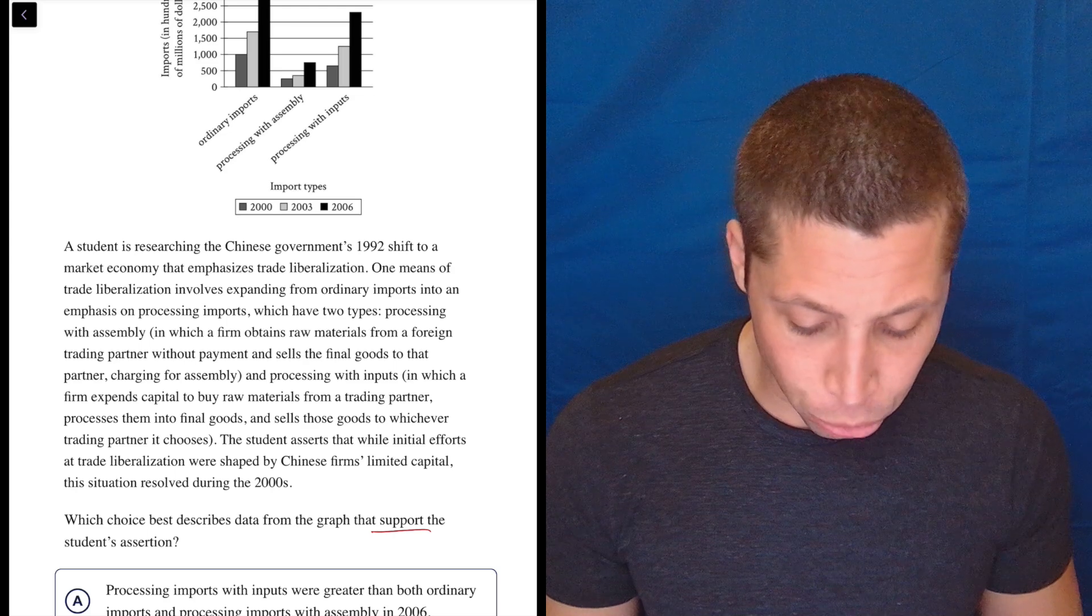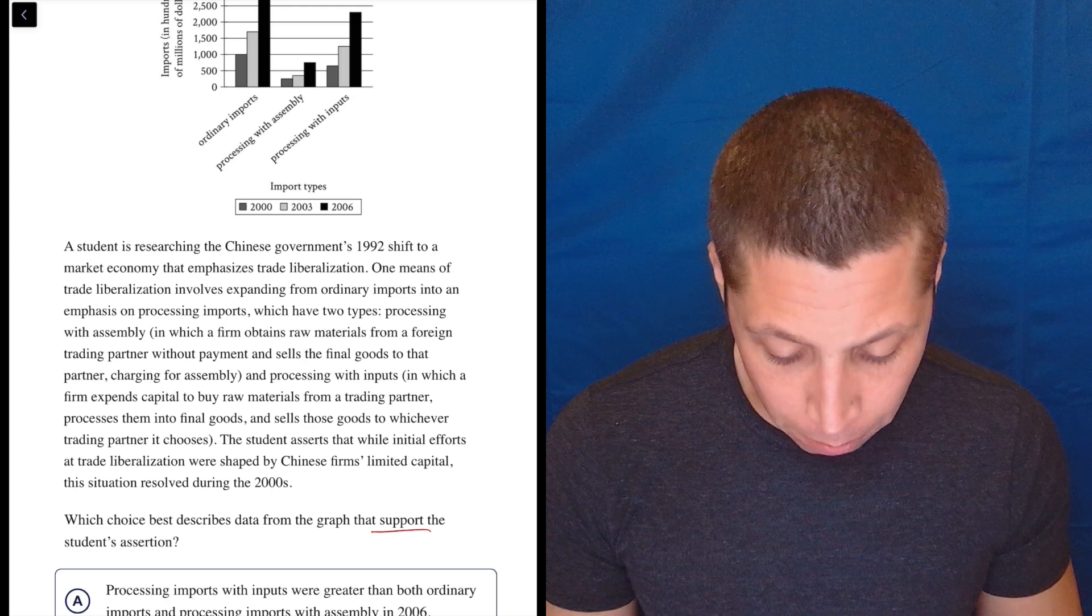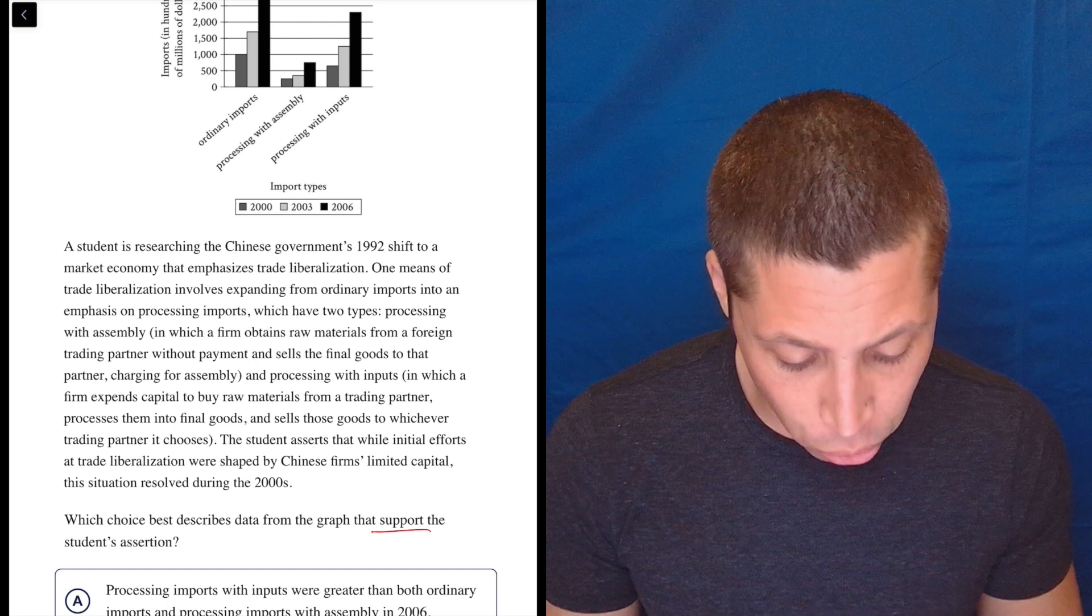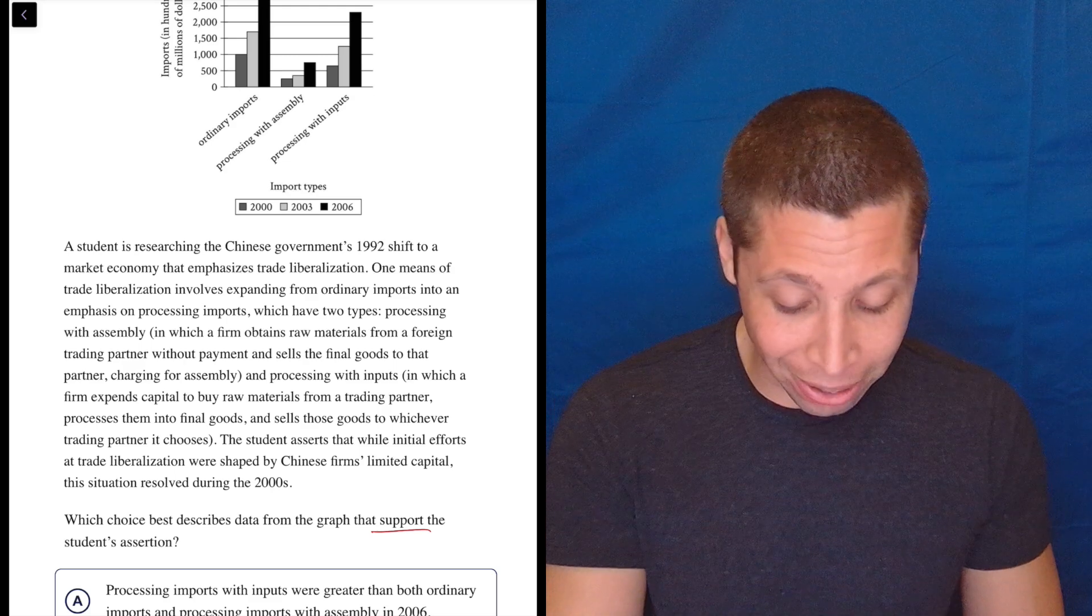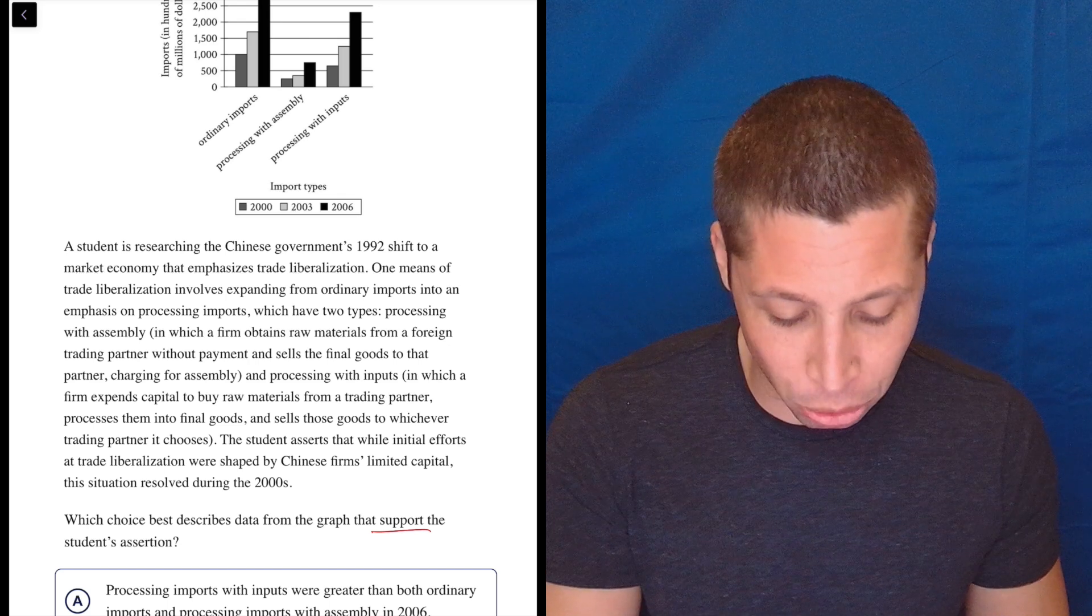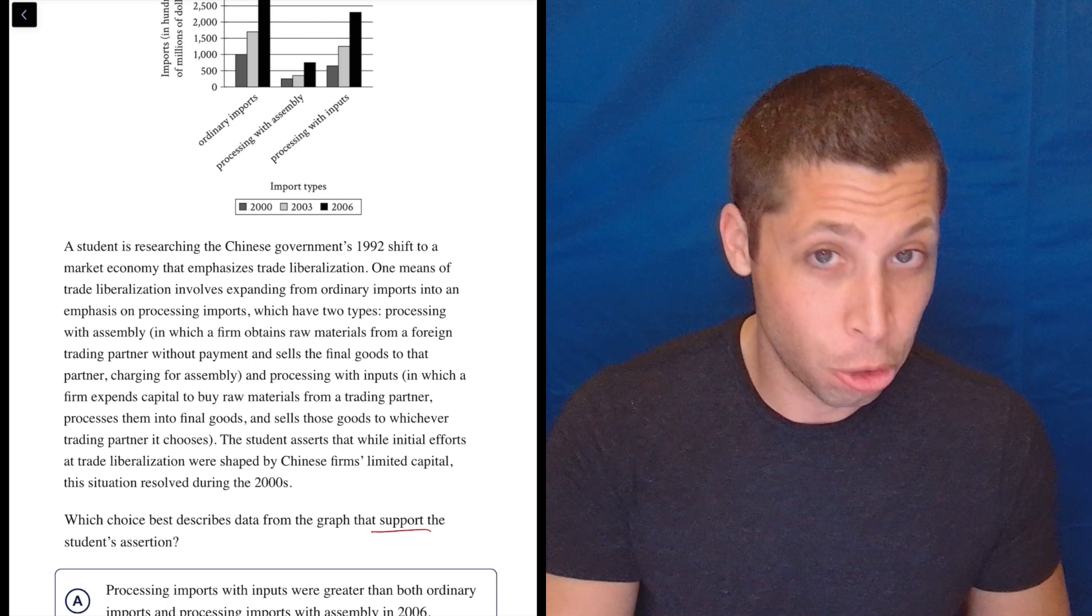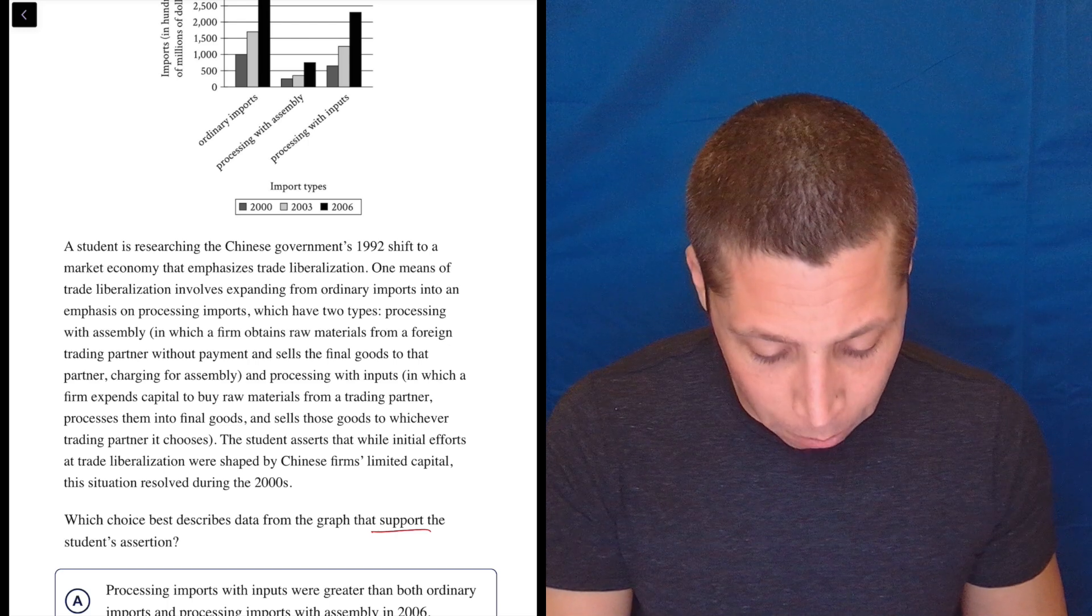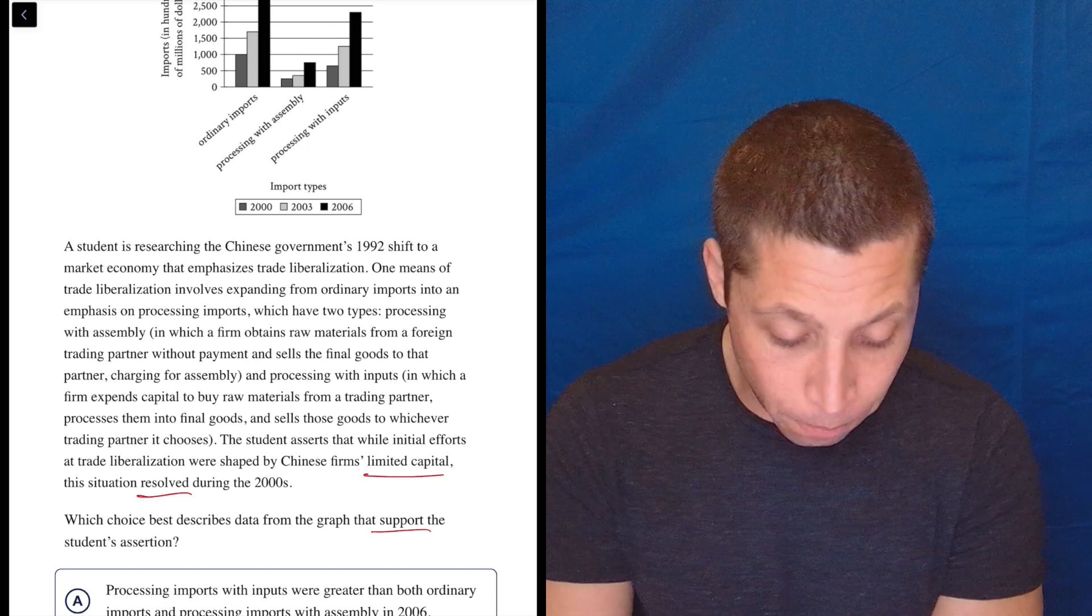A student is researching the Chinese government's 1992 shift to a market economy that emphasizes trade liberalization. One means of trade liberalization involves expanding from ordinary imports into an emphasis on processing imports, which have two types: processing with assembly, in which a firm obtains raw materials from a foreign trading partner without payment and sells the final goods to that partner charging for assembly, and processing with inputs, in which a firm expends capital to buy raw materials from a trading partner, processes them into final goods, and sells those goods to whichever trading partner it chooses. To be clear, I understand none of that. So let's continue. The student asserts that while initial efforts at trade liberalization were shaped by Chinese firms' limited capital, the situation resolved during the 2000s.